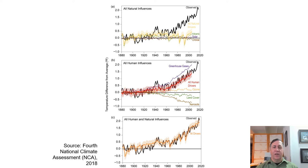Is this a natural process or is it human-caused? Graph A shows that natural temperature drivers like volcanic emissions, solar output, and orbital variances have remained flat over the past 140 years, whereas temperatures have increased sharply. Looking at graph B, human emissions of greenhouse gases, primarily fossil fuel combustion, moderated by the release of particulates like soot, match the observed temperature increases almost exactly.